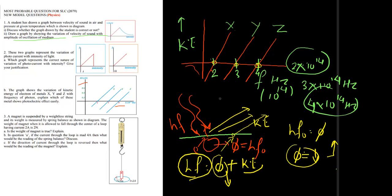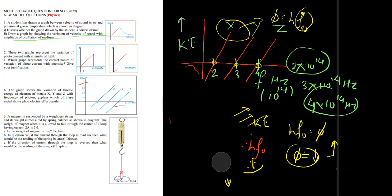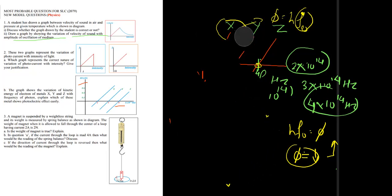We can conclude that metal X shows photoelectric effect most easily because its work function φ is the least among the three metals X, Y, and Z. Since φ depends on f₀, and f₀ is smallest for metal X, it requires the least energy for electron ejection.